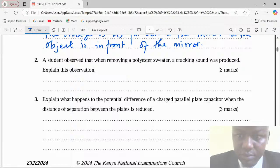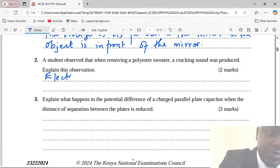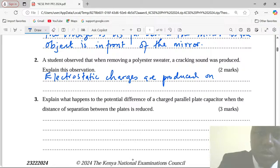A student observed when removing a polyester sweater, a cracking sound was produced. Explain this observation. This is because during the removing, the friction between the sweater and the body produced what we call electrostatic charges. Electrostatic charges are produced on the sweater due to friction.